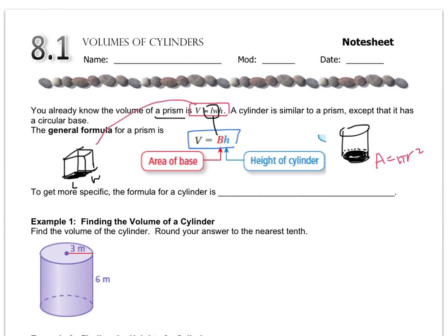So the formula for a cylinder — or the more specific formula using our big B times H — is V equals pi r squared times height, because that's how you find the area of a circle times the height. Let's use that in our examples below.